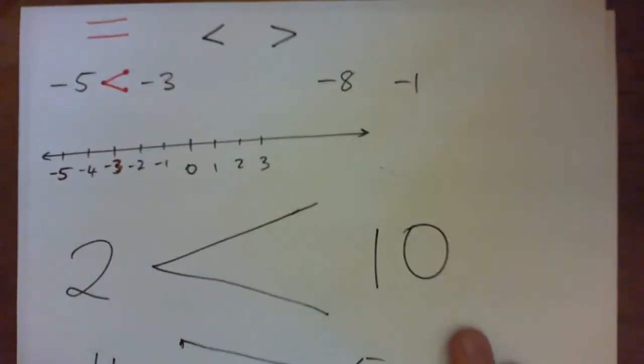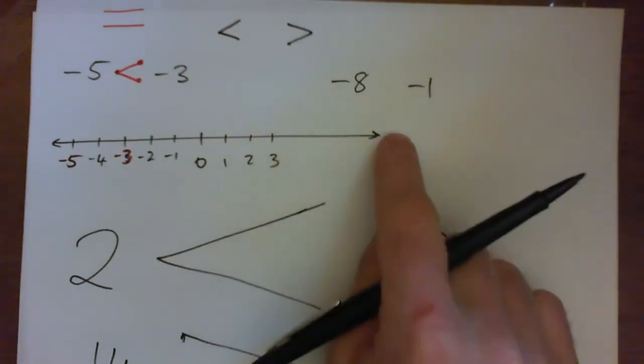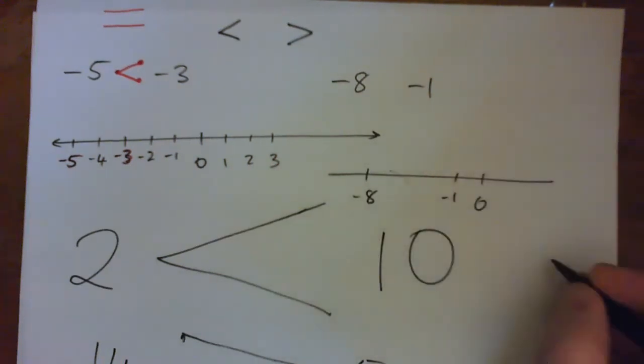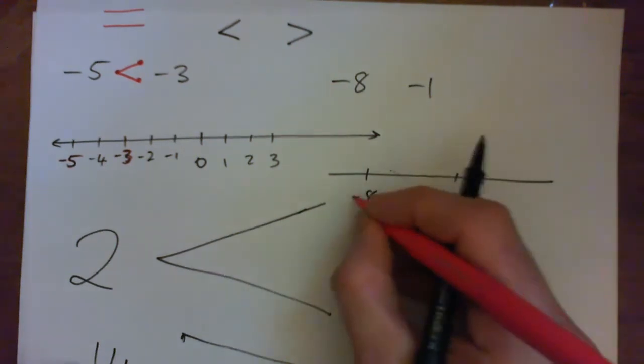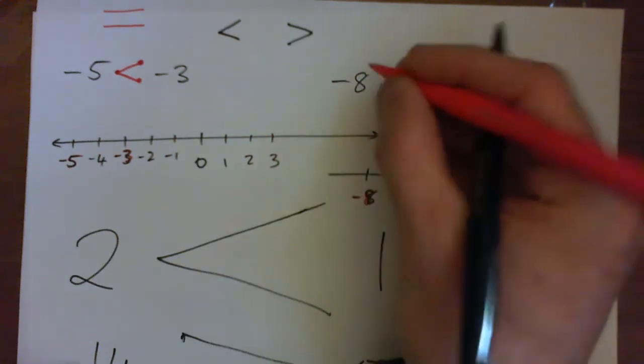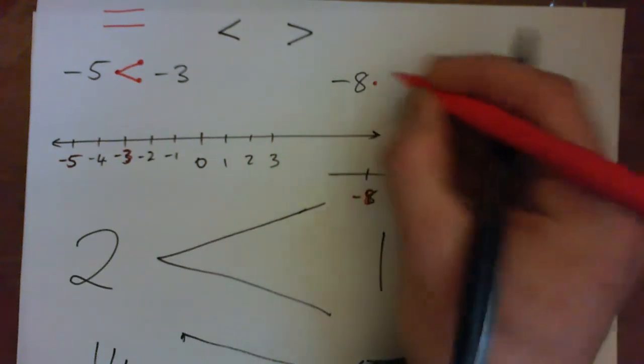Okay, so can you do this one? Negative eight, negative one. How should the inequality sign go here? So again we think about the number line. Here's negative eight, here's negative one, here's zero. And negative eight is to the left on the number line, isn't it? It's lesser.